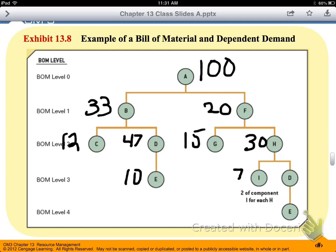In order for us to calculate the dependent demand that we have for item B, we look at the difference between the number of items that we need to produce from the parent and subtract out what we have on hand. So we know we need to produce or create 67 item B's.